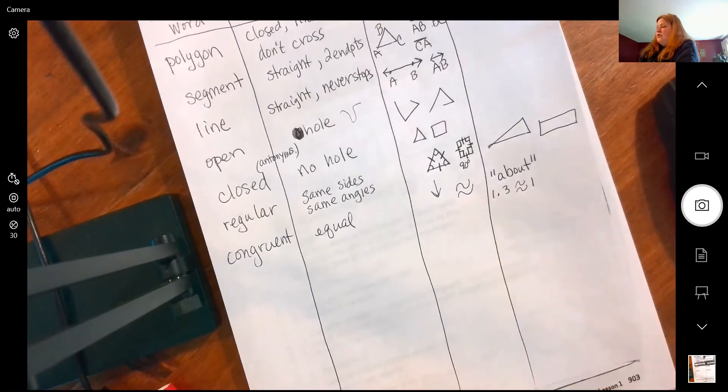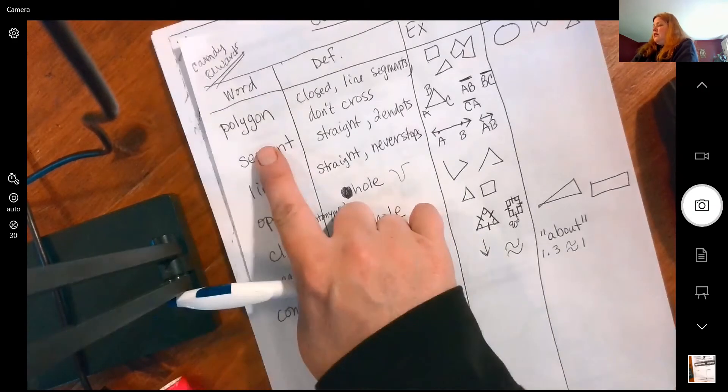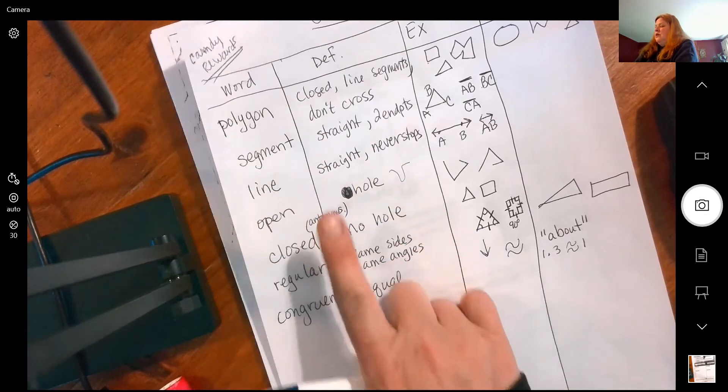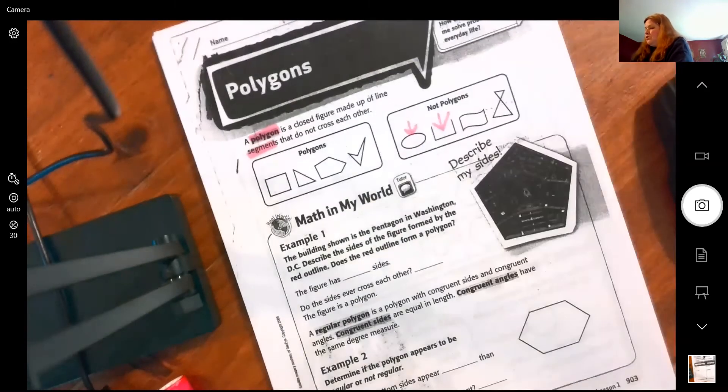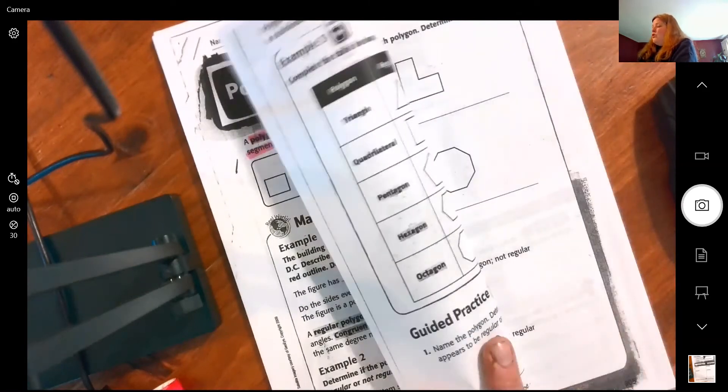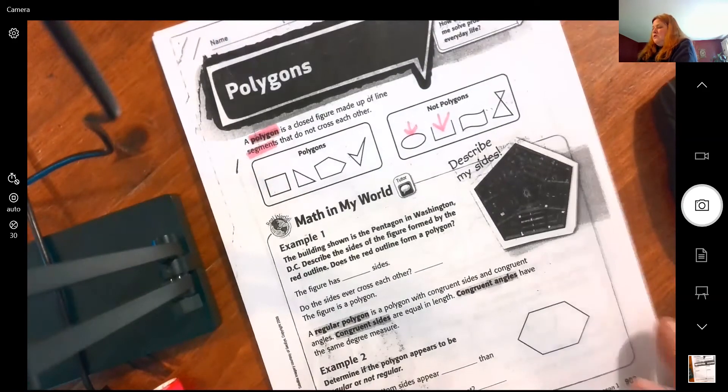They definitely use it for geometry. Okay, so polygon, segment, line, open, closed, regular and congruent. So here we go, we're going to go to our map and you are welcome to abbreviate these things. So you can write R for regular and P for polygon, so feel free.